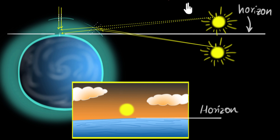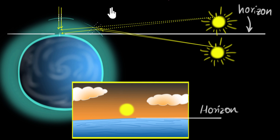And as the objects rise higher and higher in the sky, the shifting effect becomes smaller, and eventually when the object is at the highest point right above us, the shifting effect is almost zero.